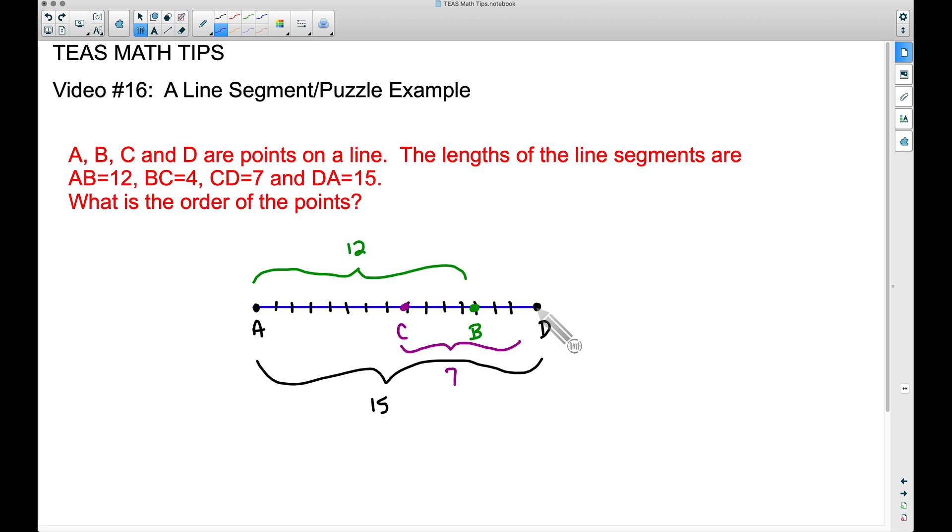And it looks like it's going to work perfect because now if you look at the only one that we have left, BC equals four, so the distance between B and C is equal to four.